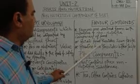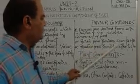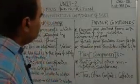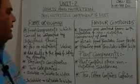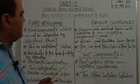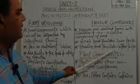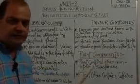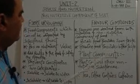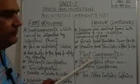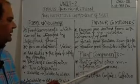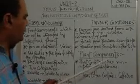Acidic food provides a sour taste — that means the flavor compound provides a sour taste. Next, alkaline food provides a bitter taste. We then come to plant components: plants contain other non-nutritive substances.